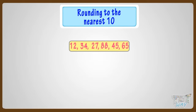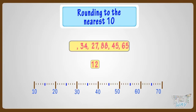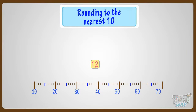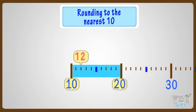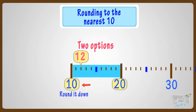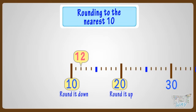Let's start with 12. See the number line — where can you fit 12? It is somewhere between 10 and 20. Whenever you want to round a number, there are always two options: either we can round it down to the previous ten, that is 10 here, or we can round it up to the next ten, that is 20 here. Think — which option do you think is more apt?